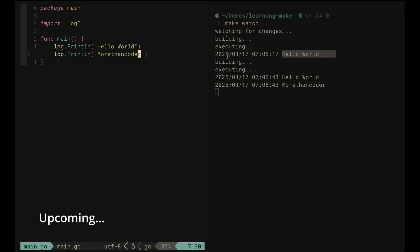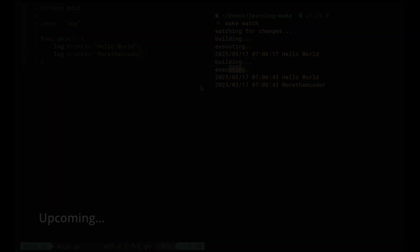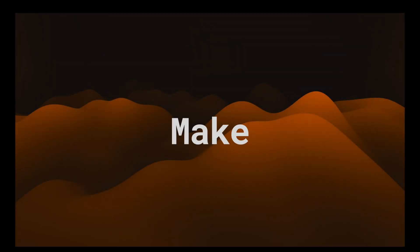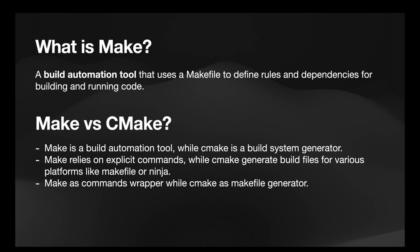After we save, we can see immediately that the code is building, executing, and then running the new code. Make is a build automation tool that uses a Makefile to define rules and dependencies for building and running our code. Think about it as a wrapper for other commands that will run other commands easily with one command.